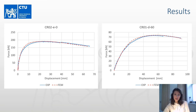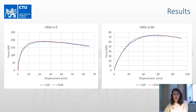The graph shows a comparison of the numerical model with the experiment. On the vertical axis is the force, and on the horizontal axis is the horizontal displacement at the mid-height of the column. The blue line indicates the experimental curve and the red dashed lines indicate the numerical model. Based on the graph, it can be said that the numerical models match the behavior of the beam columns from experiments quite well.